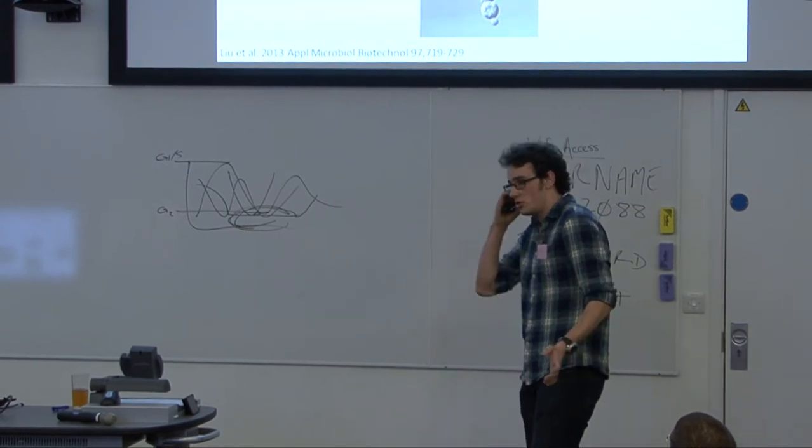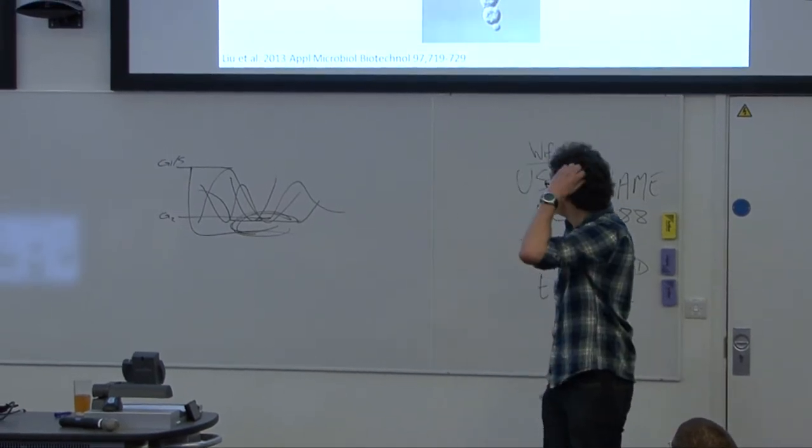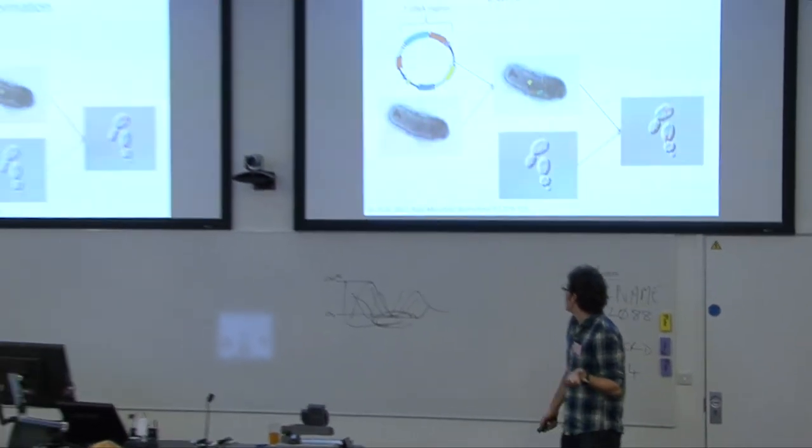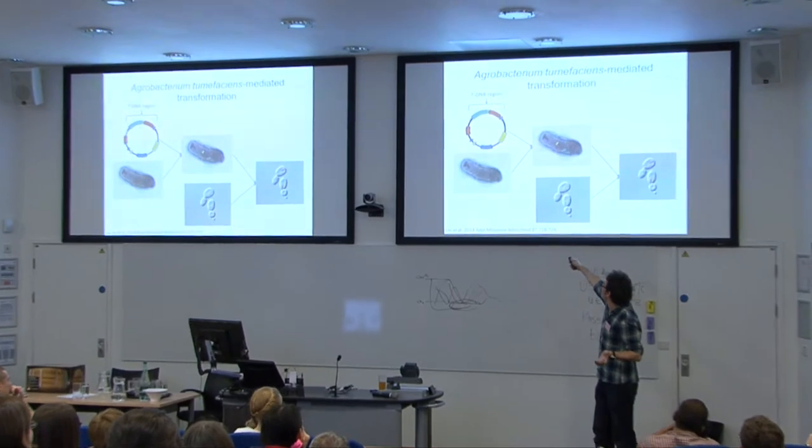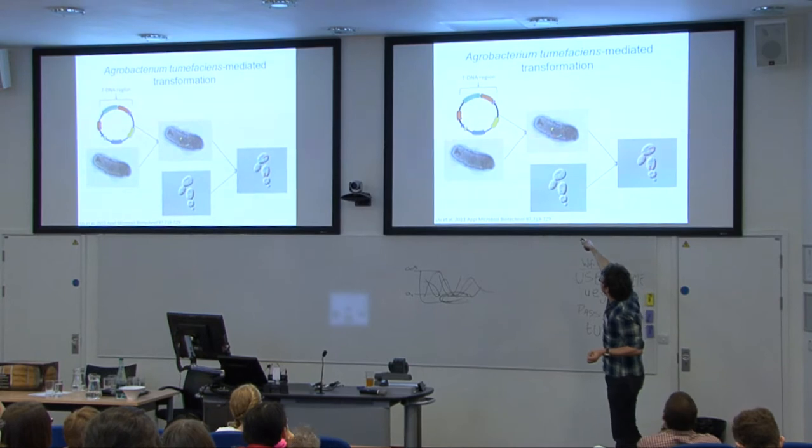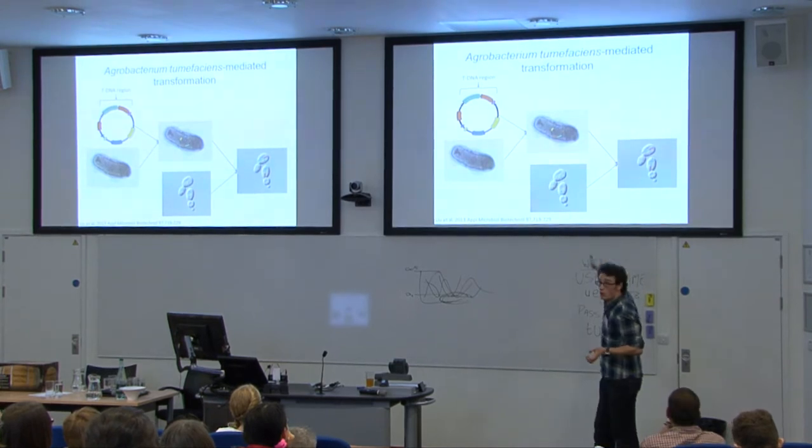Just a brief introduction to Agrobacterium-mediated transformation: it's a system very commonly used in plants, but not so much in yeast. The way it works is you have a binary vector, this plasmid here.